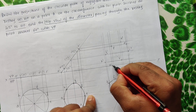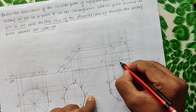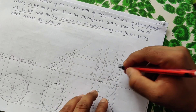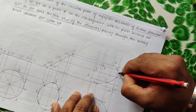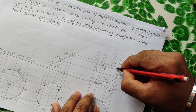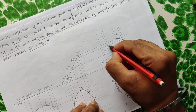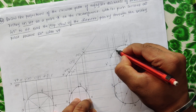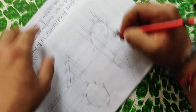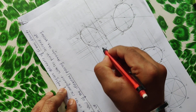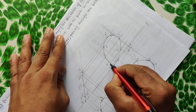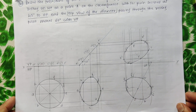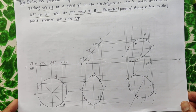Now join all the points freehand: A to B, B to C, C to D, D to E, E to F, F to G, G to H, and H back to A — getting a smooth curve throughout. This is how we get the final front view. Hope you understood this problem.